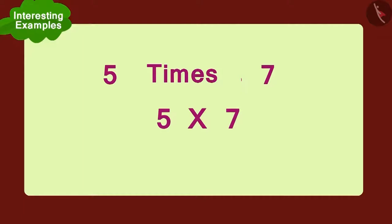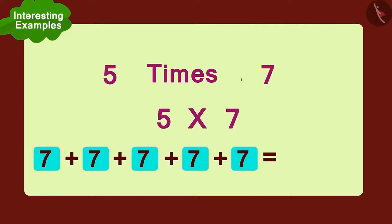Now, how will we do this by using the method of addition? Seven added to seven. Again add seven. Again add seven. And finally, add one more seven. So, what is the total number of flowers? Thirty-five flowers.